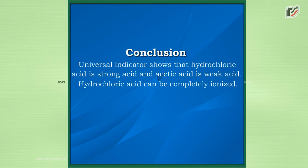Conclusion: Universal indicator shows that hydrochloric acid is a strong acid and acetic acid is a weak acid. Hydrochloric acid can be completely ionized.